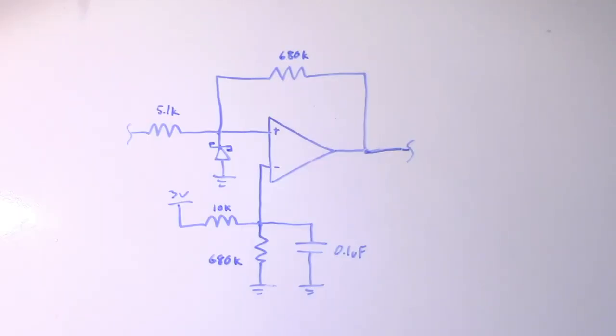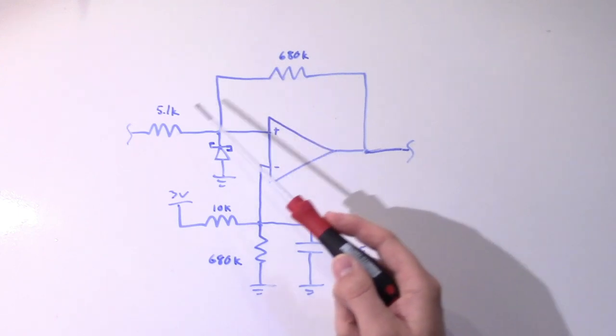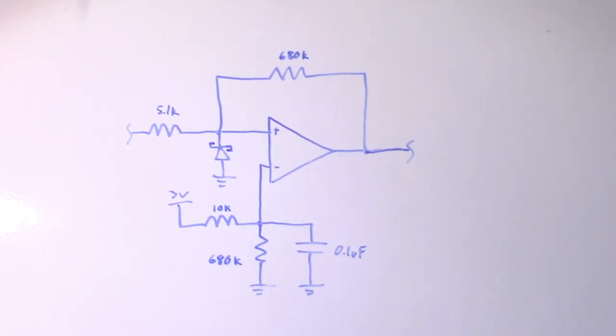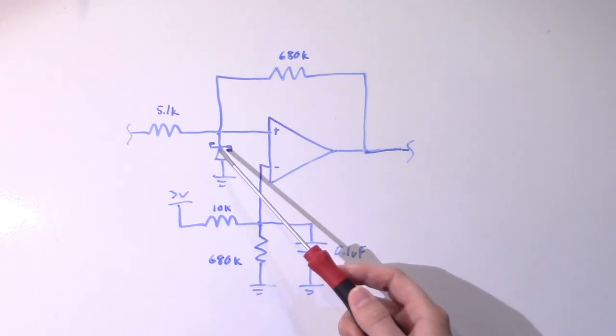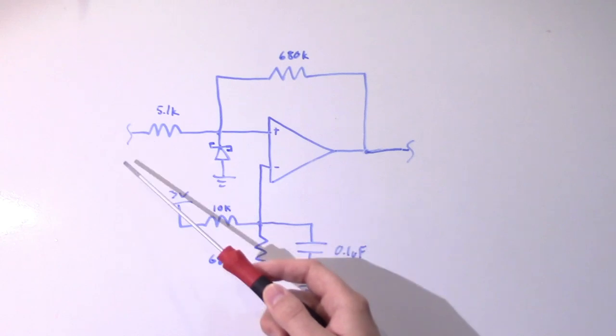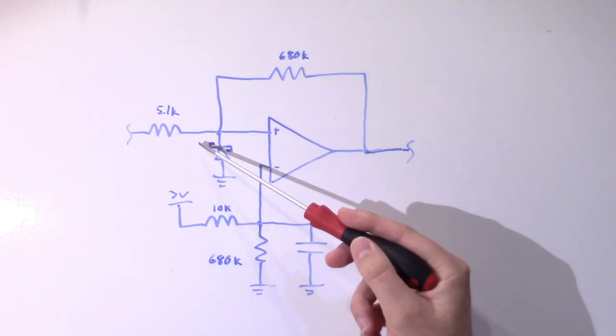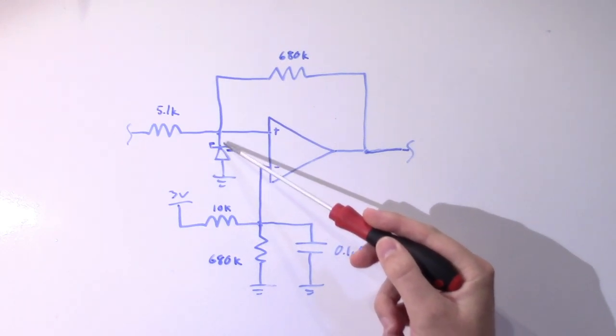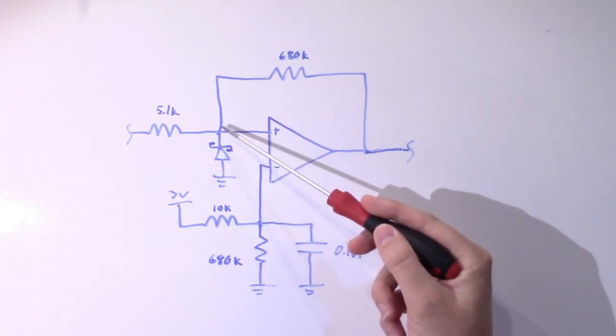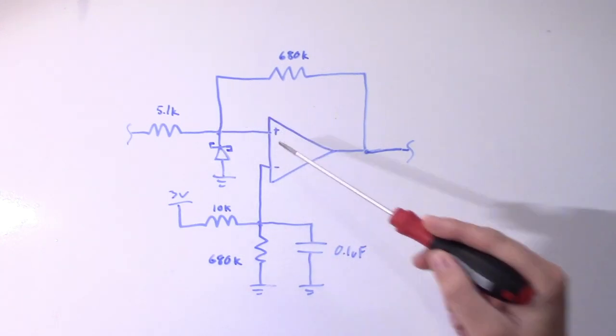Now the comparator circuit is fairly straightforward. These two resistors set the threshold voltage for the comparator, while these two provide a little bit of hysteresis. The only thing out of the ordinary is this Schottky diode, which I just added in order to protect the comparator's input from those negative voltage spikes we saw on the scope. So if this voltage drops below about negative 200 millivolts, that will turn on the Schottky diode and it'll clamp that voltage there and provide some input protection to the comparator.